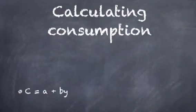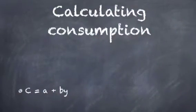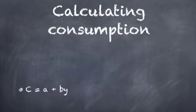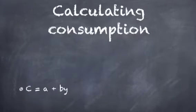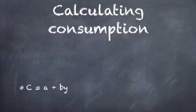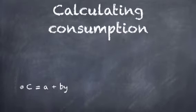So those are the two components of consumption. If we wanted to calculate consumption, we use the formula C equals A plus BY, where A is autonomous consumption and BY is induced consumption.